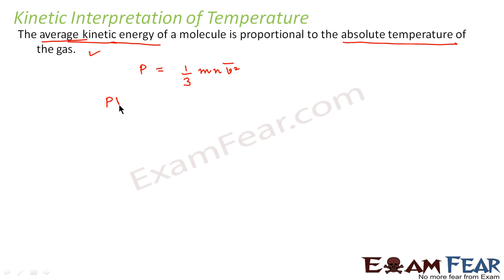Now let us multiply V on both sides. So we get 1/3 m n V v square bar. Now let us suppose we multiply and divide by 2 on our right hand side. So we get 2/3 n m v